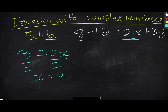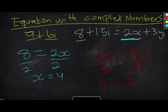We can now take the imaginary part. We have 15i equals 3Yi. We can divide both sides by 3i — the i cancels out and the 3 cancels out — giving Y equal to 5. So the values of X and Y are X equals 4 and Y equals 5 respectively.